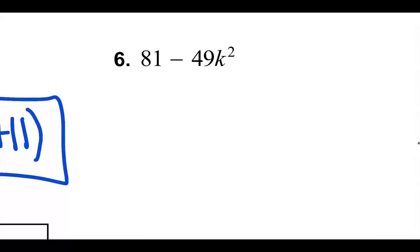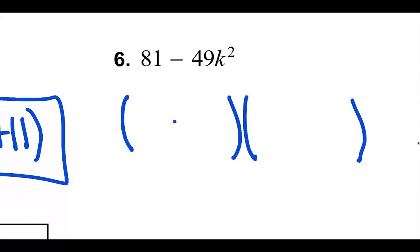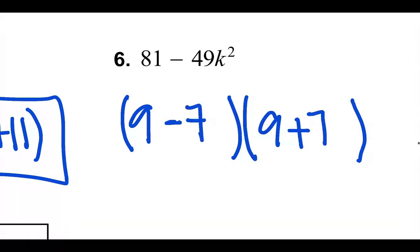Let's do one more of these, just for fun. Let's see if we can do it without writing everything down. Square root of 81 is 9, and square root of 49 is 7. The square root of k squared is just k. So the answer is 9 minus 7k times 9 plus 7k — ta-da!